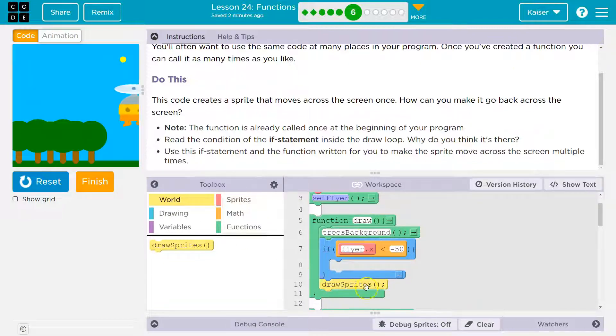Draw loop runs 30 times a second. We're redrawing the background right here. We're asking the computer, hey, is our sprite negative 50, which would be off the screen? Is our sprite off the screen? No. Is our sprite off the screen?